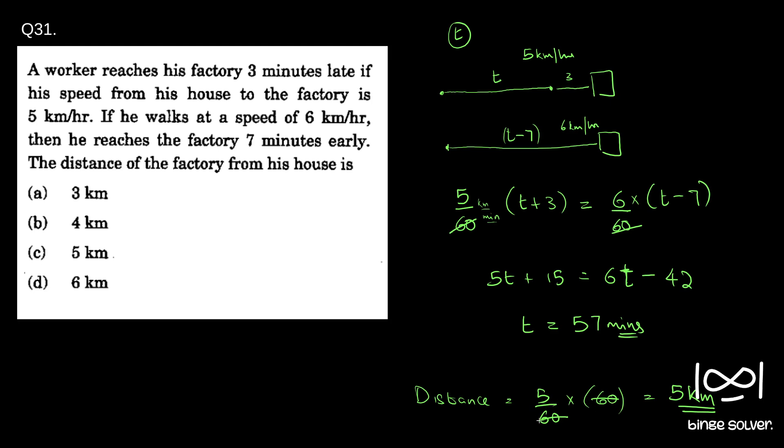So here we got 60 as t plus 3. This is t plus 3. We use this equation. We could have used the other equation also, that is 6 by 60 into t minus 7. We will get the same answer.